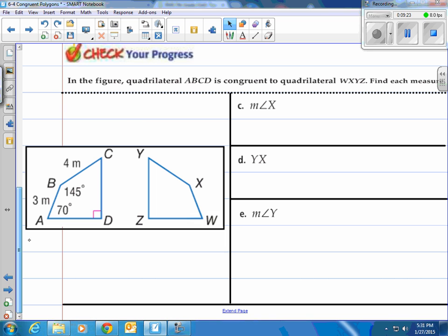Alright, give it a shot here. It says quadrilateral ABCD is congruent to quadrilateral WXYZ. Find each measure. I can see that we have ABCD matching up with WXYZ. So I can make it a little easier to see. A matches up with W, we've got B matching up with X, we've got C matching up with Y, and we've got D matching up with Z.